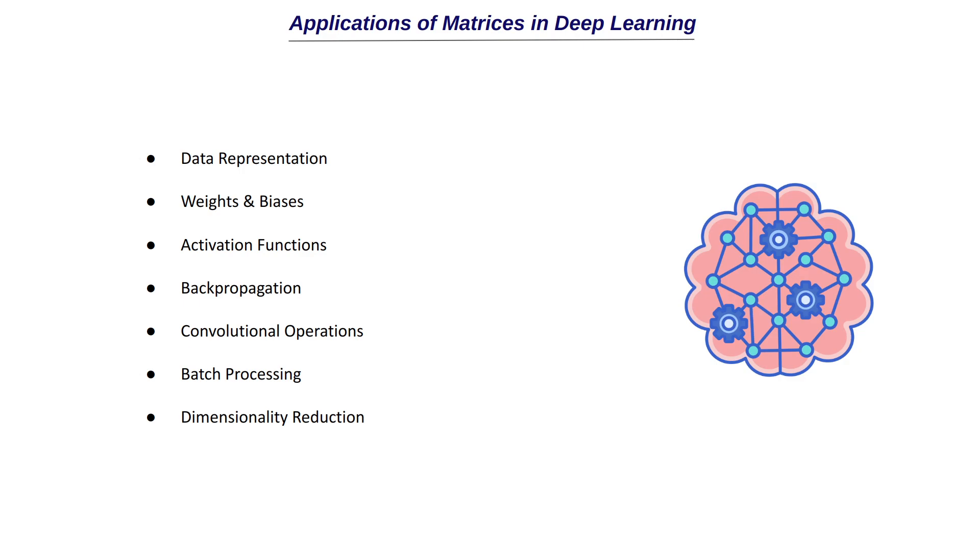And then we have this dimensionality reduction. So we have this concepts like PCA, principal component analysis, and we have this singular value decomposition. So which is mainly used to reduce the dimensions of your data and for this feature extraction thing. So the concepts of this matrix decomposition and all those are used. So these are some of the widely used applications of matrices in deep learning.